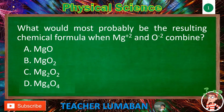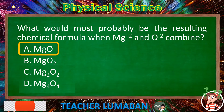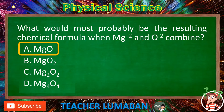The correct answer is Letter A: MgO. MgO is most probably the resulting chemical formula when Mg²⁺ and O²⁻ combine.